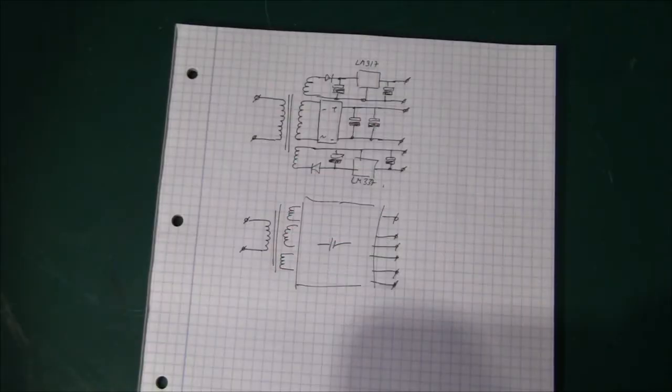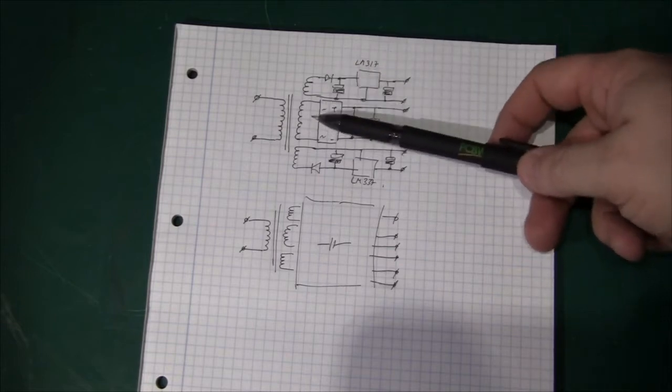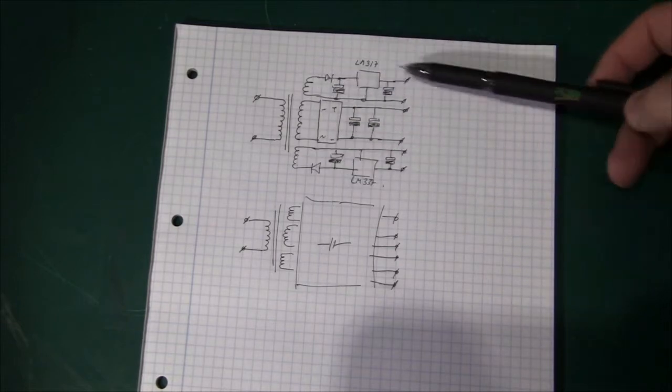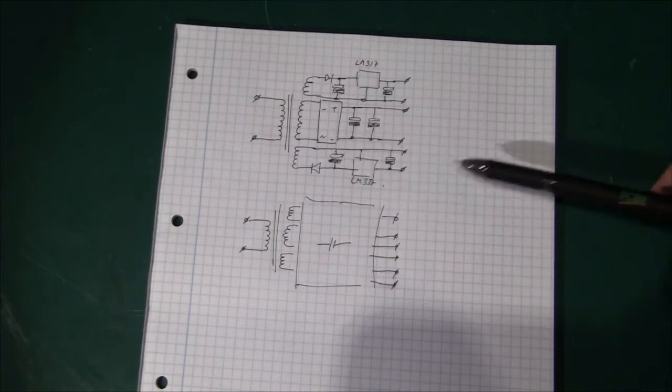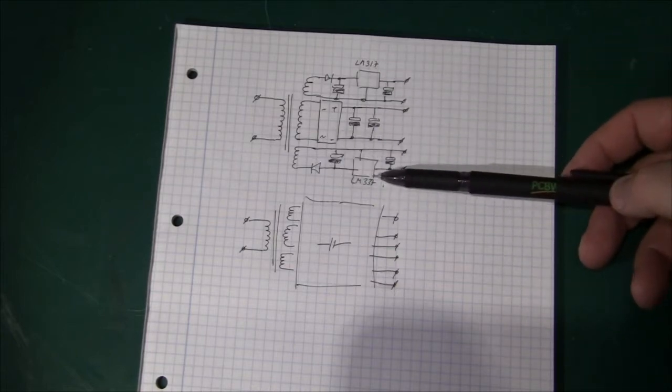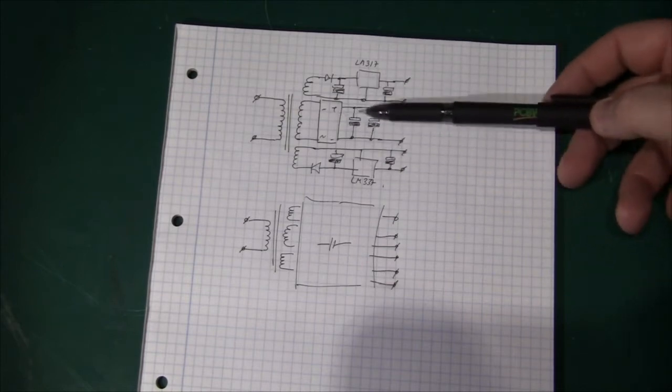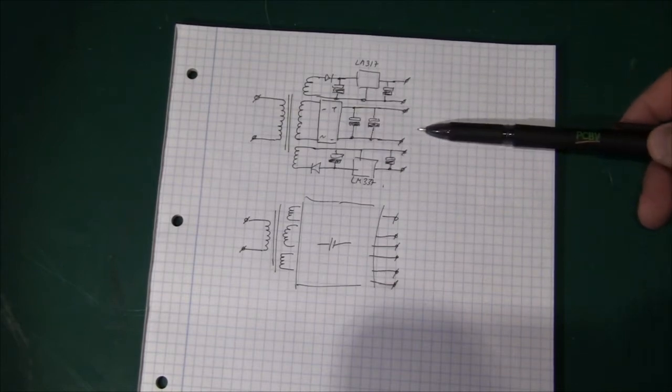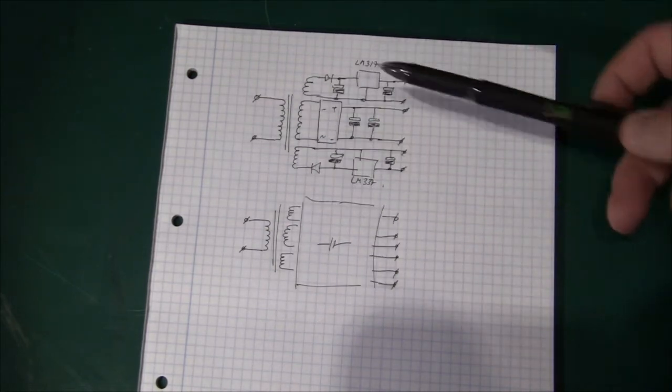Okay, so basically this is how I think it works. I haven't traced everything, but this is a rough estimation. Basically we have the big transformer and it has three windings on the output. One is generating a plus supply, one is generating a negative supply using LM317 and LM337 respectively. And then we have a bigger supply here that is unregulated. And we have two circuits like this on the board.